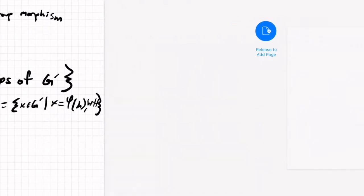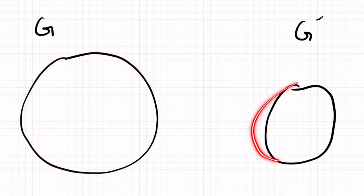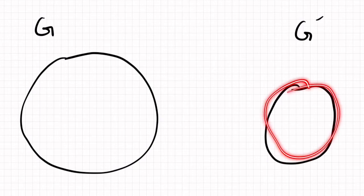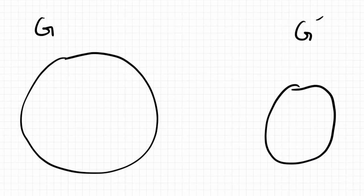So a way I like to visualize the correspondence theorem is by writing this sort of Venn diagram-y type of thing. Maybe it's not quite a Venn diagram, but the picture looks like this. So we have a group G, right, which is a set of elements, and group G prime, which is a possibly smaller set of elements,